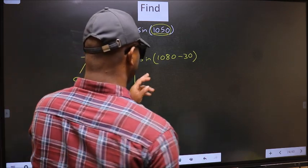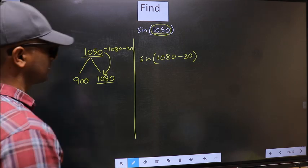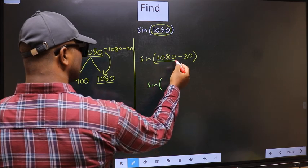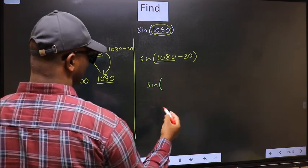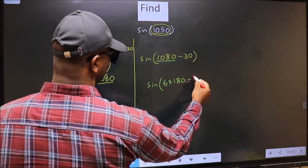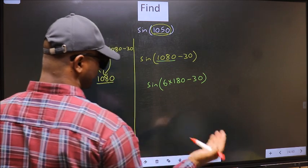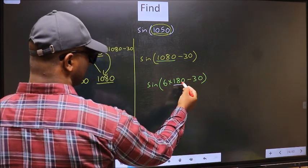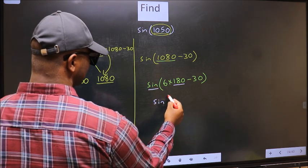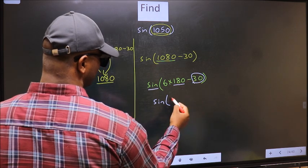This is your step one. Next, sin. In place of 1080, now we write 6 × 180 - 30. Next, here we have 180, so sin is not going to change. It will remain sin and inside we get this angle 30.